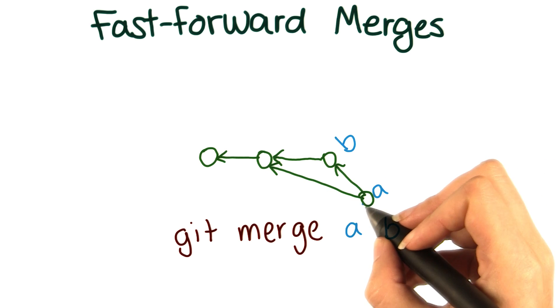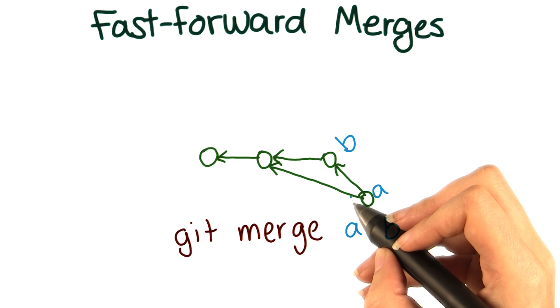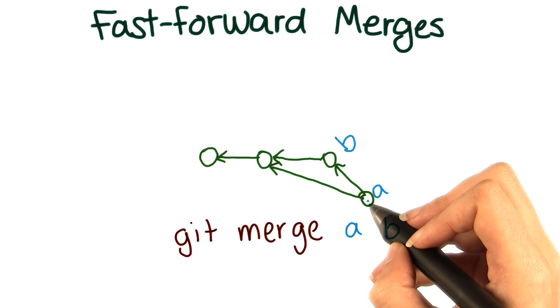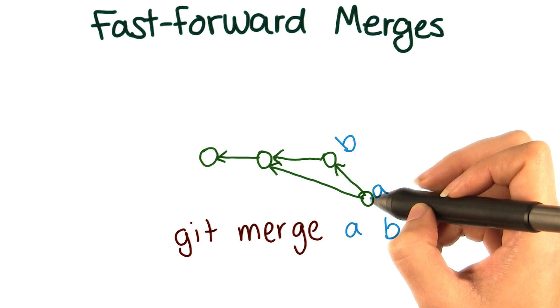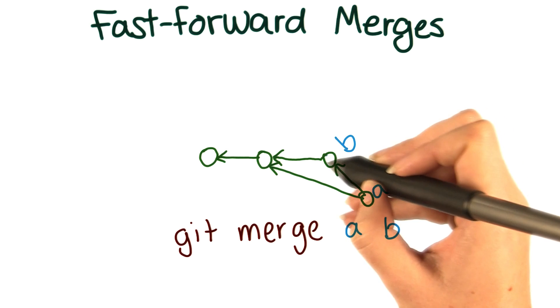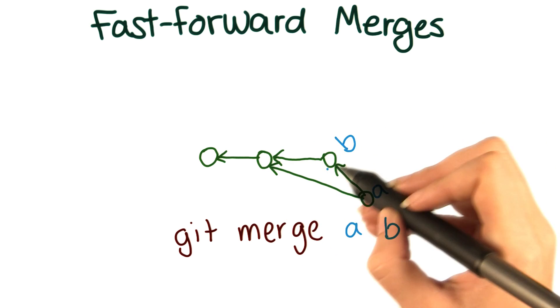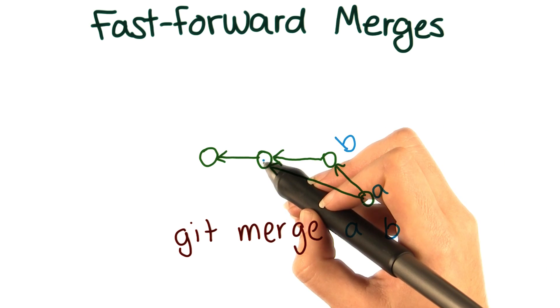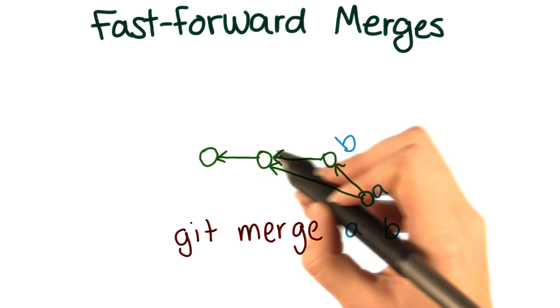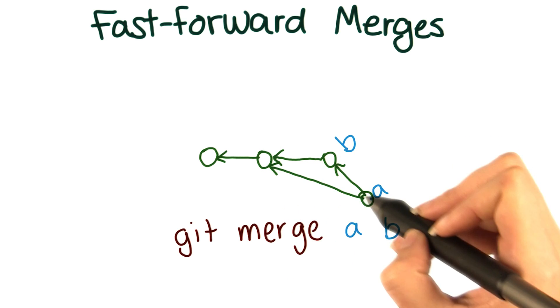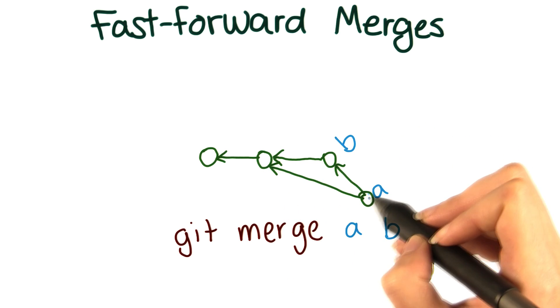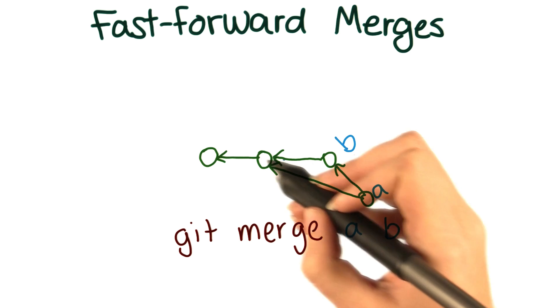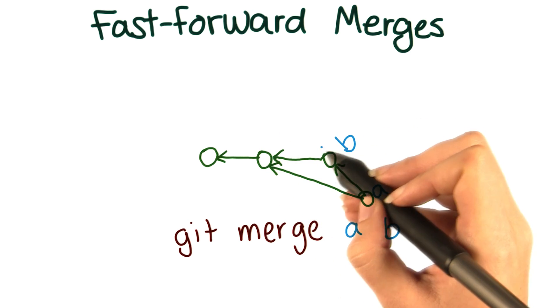In the usual case, merge commits are generated to keep track of all the commits that played a part in getting to this new state. But in this case, the commits that played those parts are this one and this one. And this commit already has all the information about this one's history. So there's no actual reason to add this extra one. Instead of adding a new commit, all we would do is update the label to point here instead.